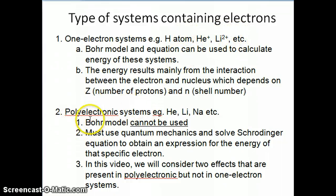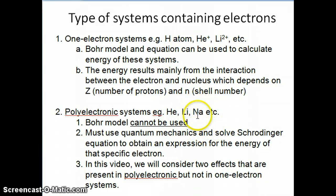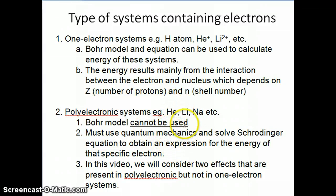We are very interested in understanding how to calculate the energy of polyelectronic systems, which includes helium, lithium, sodium atom, and ions like sodium plus — systems that contain more than one electron. This is really where quantum mechanics shines: it can calculate the energy of all of these systems, whereas the Bohr model cannot. This is why we eventually switch over to quantum mechanics, because that's the model that allows us to make predictions on these systems.